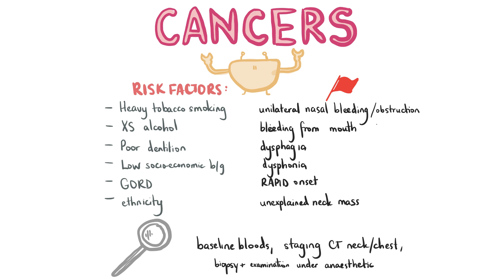Symptoms that should make you suspicious about an underlying cancer include unilateral nasal bleeding, unilateral nasal obstruction, bleeding from the mouth, dysphonia such as hoarseness with no known cause, dysphagia, rapid onset of symptoms, facial palsy, weakness or numbness, stridor, an unexplained neck mass, and rapid unintentional weight loss. Useful investigations include a staging CT of the neck and chest, examination, plus biopsy under anaesthetic.